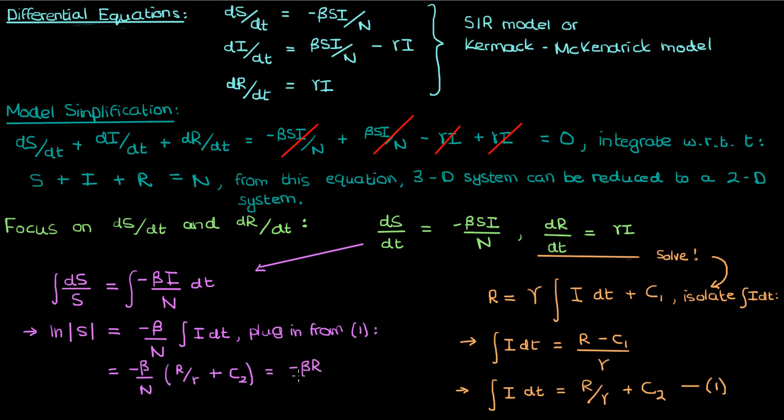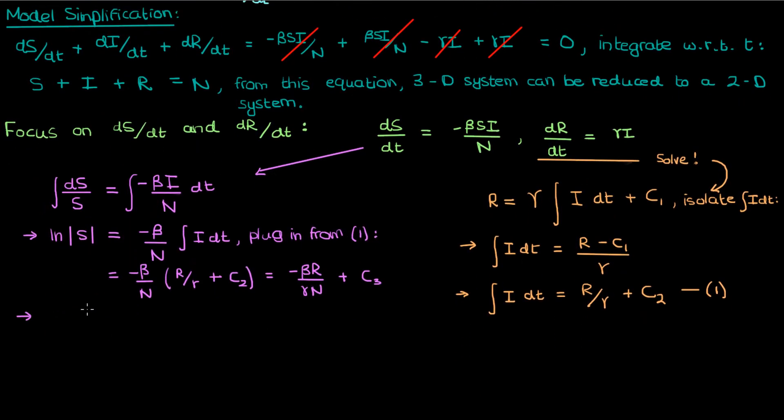Now the beta over N times c2 is just another constant which I'll call c3, giving us the following for ln S. If we now exponentiate both sides we can isolate the S of t. The exponential of sums, as you know, is the product of exponentials, and the exponential of c3 is another constant I'll call c4.